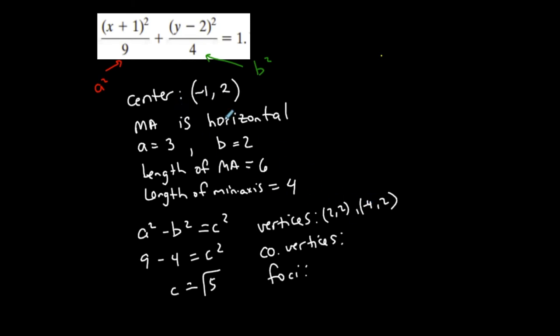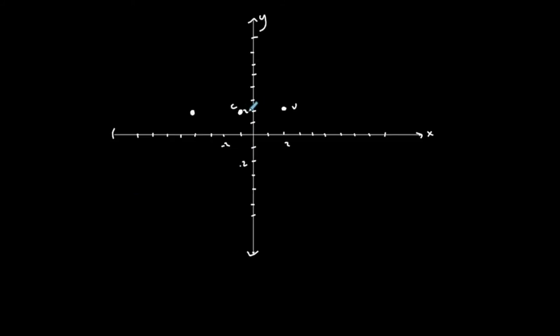And you can even look at it here and go negative 1 plus 3 is 2, and negative 1 minus 3 is negative 4. So all that stuff kind of fits. To get to my co-vertices, I want to count two units up and down now for my minor axis.